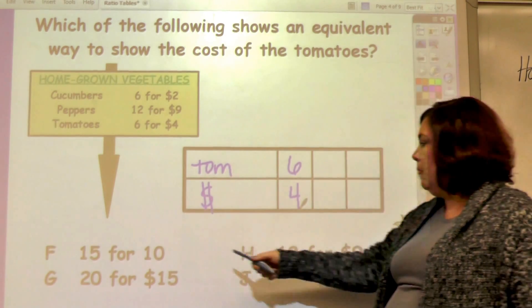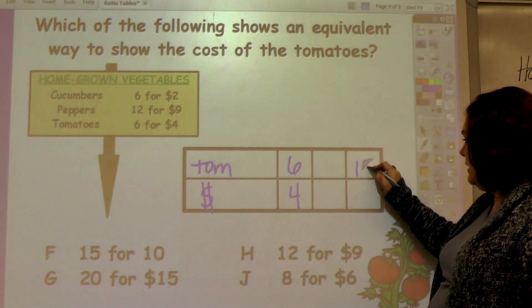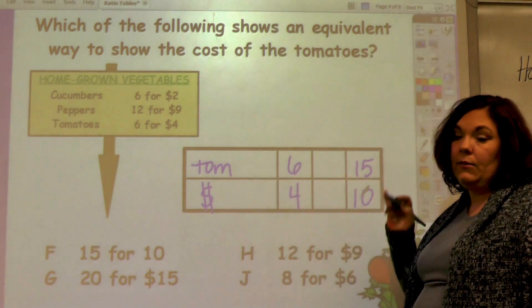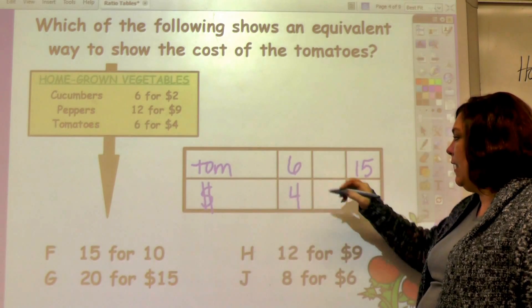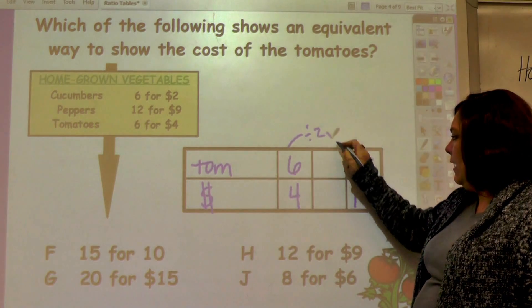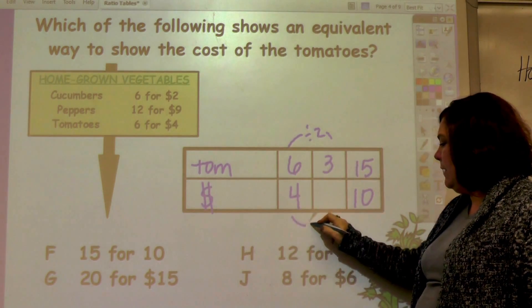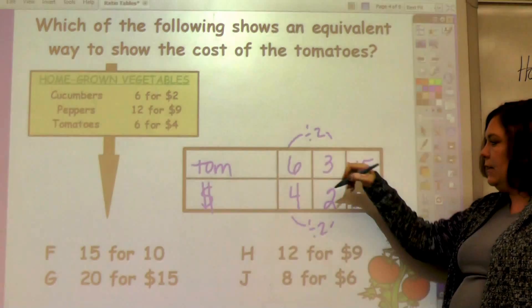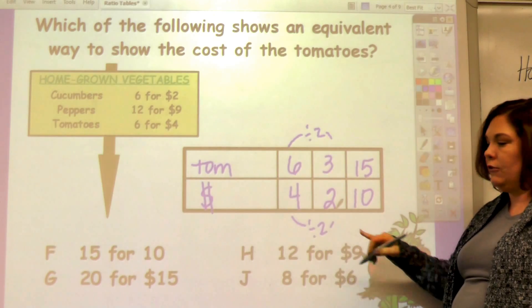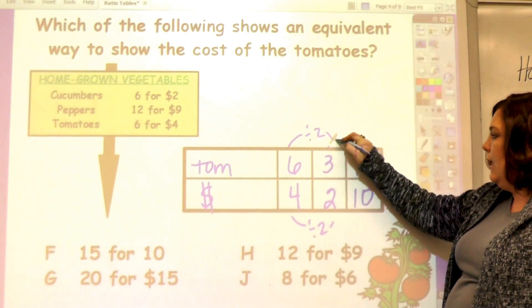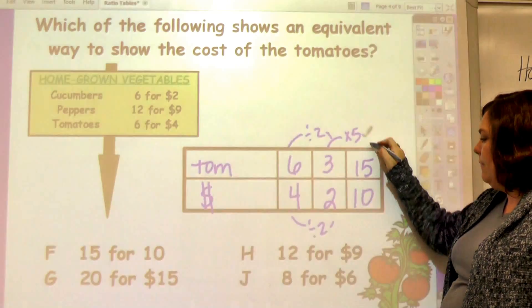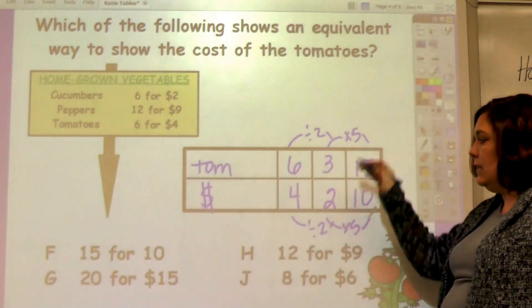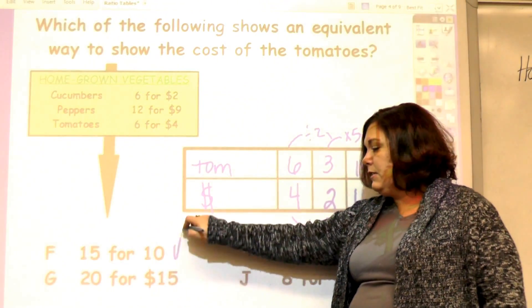Let's start with F. That says 15 tomatoes for ten dollars. I can't go directly, so I have to simplify before I multiply. If I divide by two I get 3 and 2. Now I have to look, does this scale factor match? This is times 5 and this is times 5, so it does match. So this is the answer here.